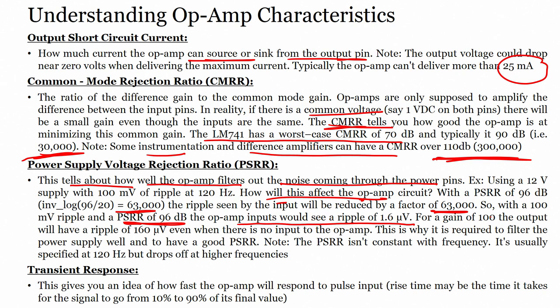Therefore, with a gain of 100, the output will have a ripple of 160 microvolts even when there is no input to the op-amp. This is why it is required to filter the power supply well and to have a good PSRR, so that noise coming through the power supply is taken care of. PSRR is usually specified at 120 Hz but drops at higher frequencies.